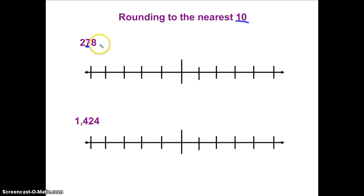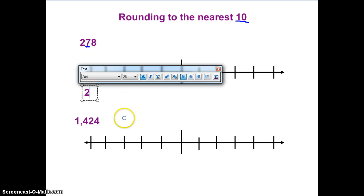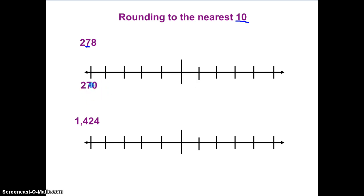Sometimes students get confused because they're like, the number is 278, so I'm rounding to the nearest hundred, right? Nope, you are rounding to the nearest ten. So always check to see what you're doing. Let's label our number line. I'm rounding to the nearest ten, so on my number line I'm going to write whatever is in my tens place right now. So I have seven tens, that's 70.